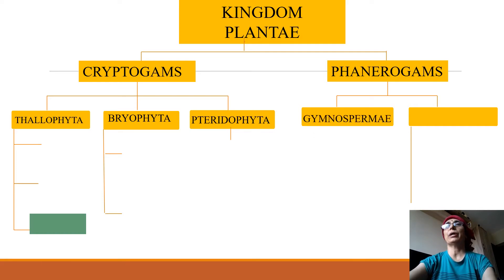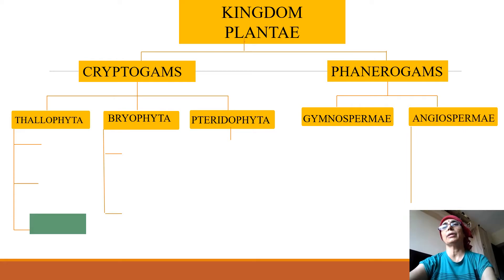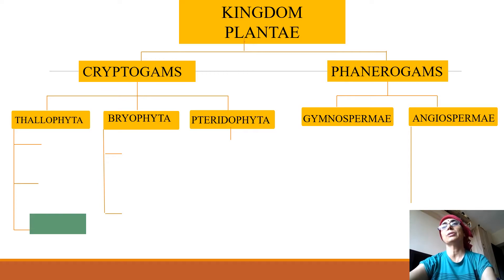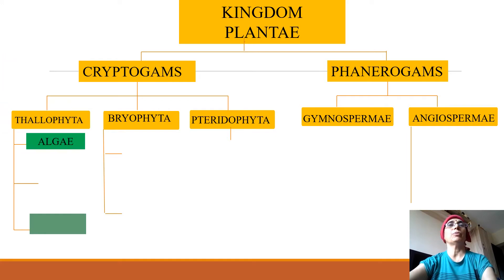Similarly, phanerogames is divided into two groups: gymnosperms and angiosperms. In gymnosperms, the sex organs are naked, and in angiosperms, the sex organs are enclosed — the ovules are enclosed within the ovary.